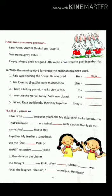Now question number H. Here you have to fill in 'I', 'you', or 'we'. You have to write the name of the person you want to use. For example, 'I am seven years old.' 'You' is used for the person you are speaking to — for example, 'Are you Pinky or Rinky?' And 'we' is used when others are included along with us.